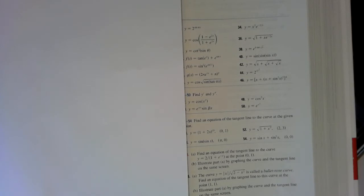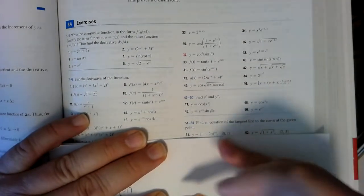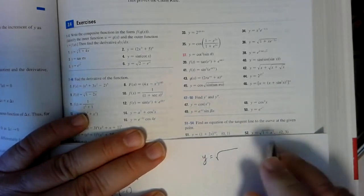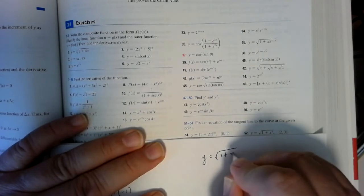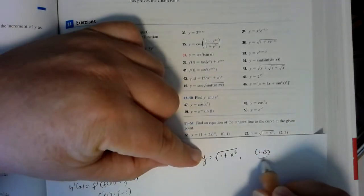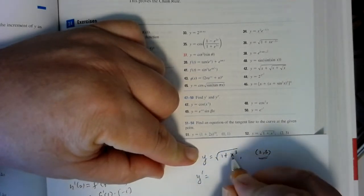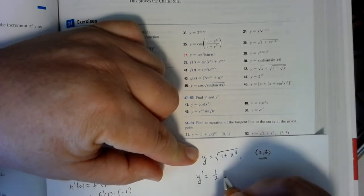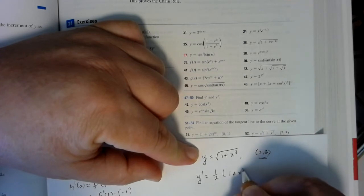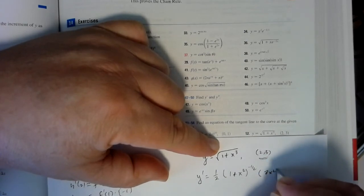Let's do problem 52: finding the equation of a tangent line to the curve at a given point. If our function is y equals the square root of 1 plus x cubed, and we're at the point (2, 3), we need a slope. The outside function is the square root, so we apply the chain rule and multiply by the derivative of the inside function, which is 3x squared.